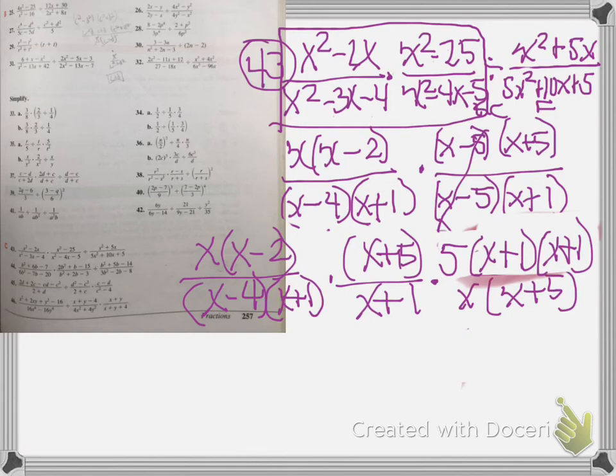Again, with these you want to take your time and go step by step. So now we're going to look at what we can reduce. We know that x plus 5 and x plus 5 can be reduced. Then we know x plus 1 and x plus 1 can be reduced.